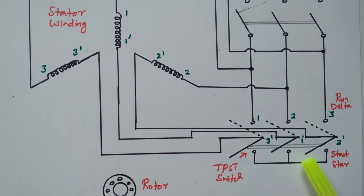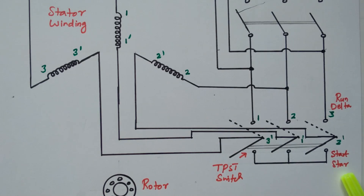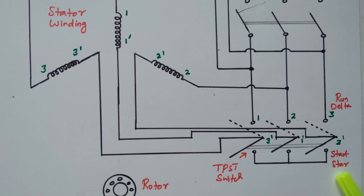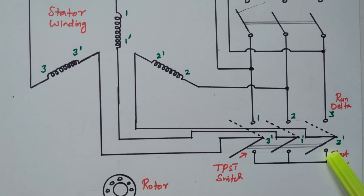During starting, the TPST switch is placed in the star connection. Why are we connecting star connection? In the star connection, the voltage is reduced by the factor 1 by root 3. The nature of the star connection is that only 1 by root 3 of the voltage will be applied to the stator winding. So due to this reduced voltage, the current drawn by the stator also reduces. Once the induction motor gains normal speed, the switch is changed over to the running condition — that is the delta connection.